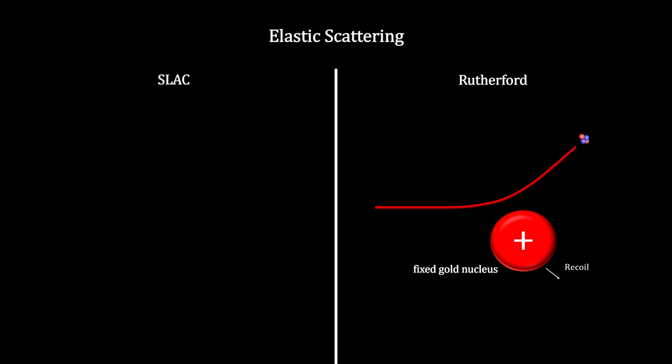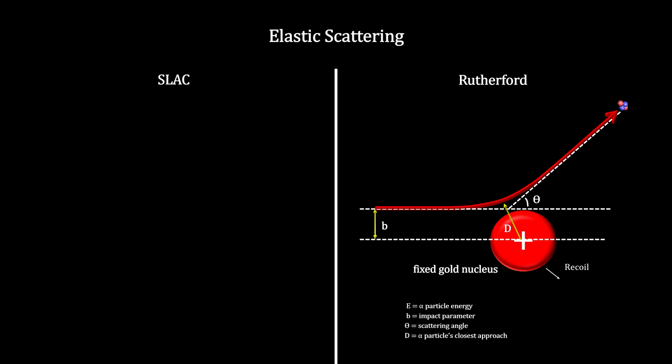Rutherford was examining alpha particle scattering angles off a gold atom target to determine the size of the nucleus. He had to use an alpha particle probe with fixed energy at 7.7 million electron volts. The Coulomb force was repulsive, and his target nucleus was fixed in the solid gold foil. So the target recoil velocity was tiny, because the entire foil had to move.